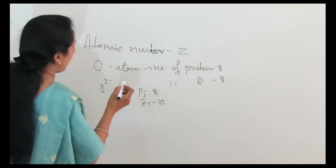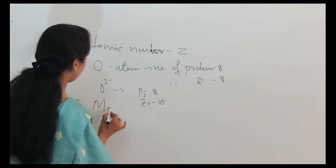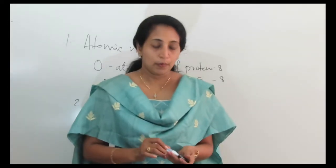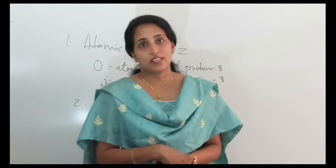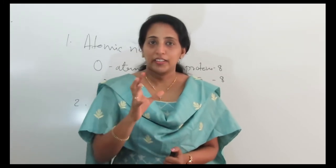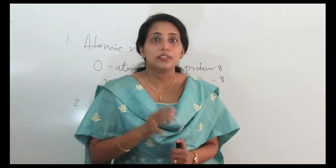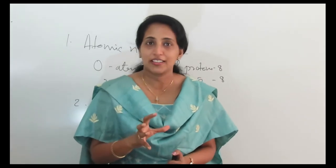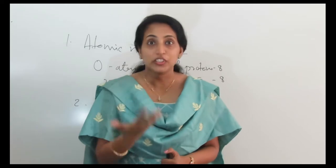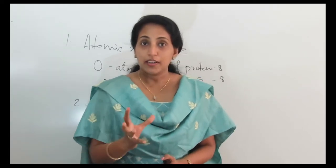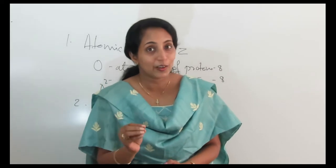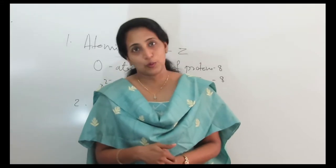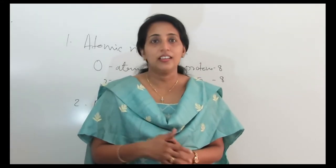Now we can see the mass number. Mass number means it is the sum of the protons and neutrons. The mass is concentrated on the nucleus. So the mass number is the total number of protons and neutrons in the nucleus, and it is represented by the letter A.